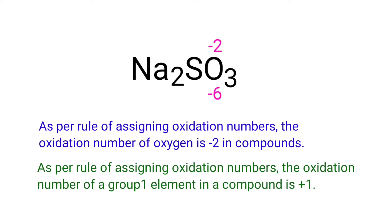As per the rule of assigning oxidation numbers, the oxidation number of a group 1 element in a compound is plus 1. Sodium is a group 1 element, so the oxidation number of sodium is plus 1.